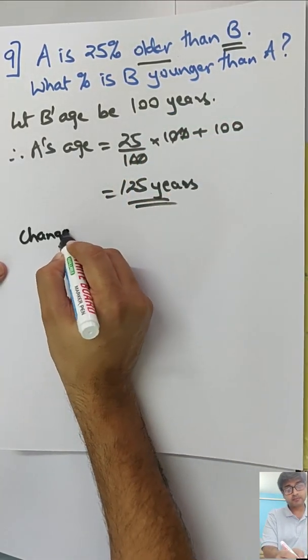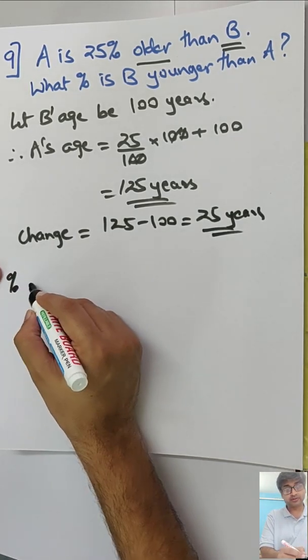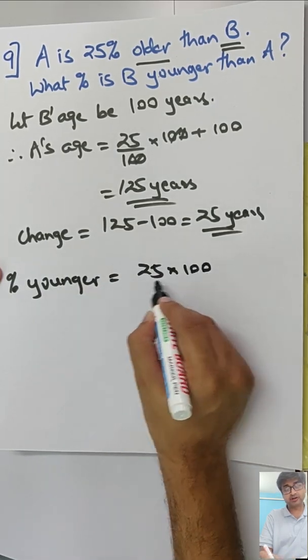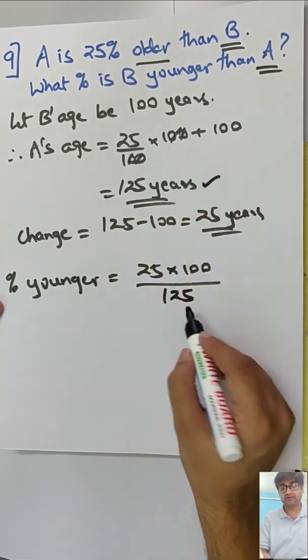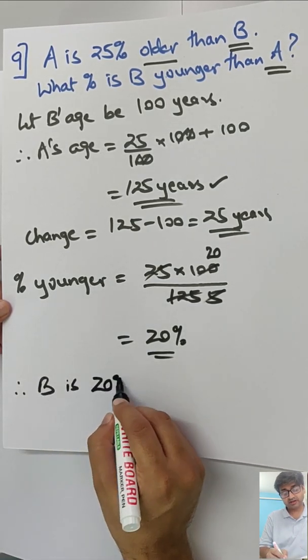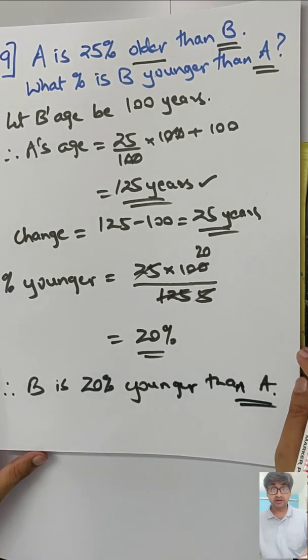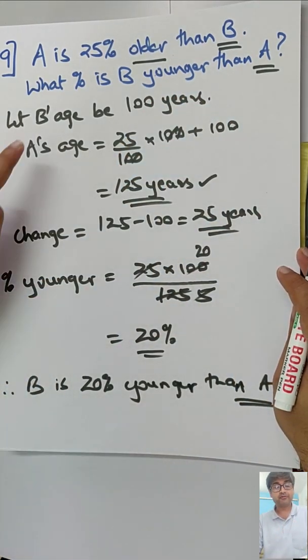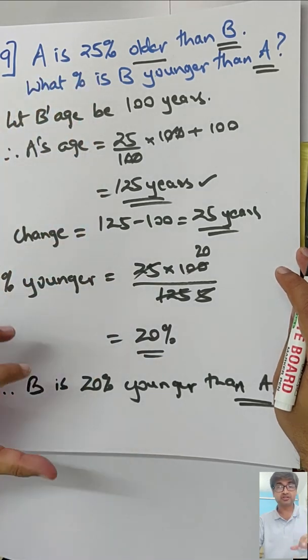Now your question is what percent is B younger than A. First the change, so change is 125 minus 100, so B is 25 years younger than A. But percent younger, how much percent younger? 25 into 100 upon what? Now B younger than A compared with A, so A's age should come down, that is 125. So 20% younger. Therefore B is 20% younger than A. A is 25% older than B but B is 20% because the bases are changed. When you take this 25%, 100 is the base, but when you want to take this then 125 becomes the base.